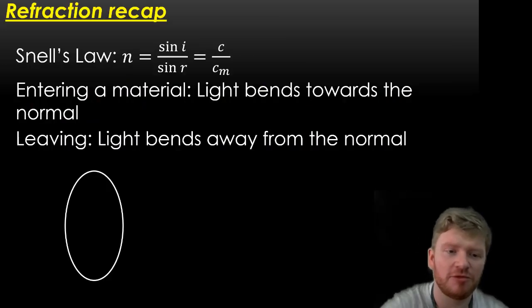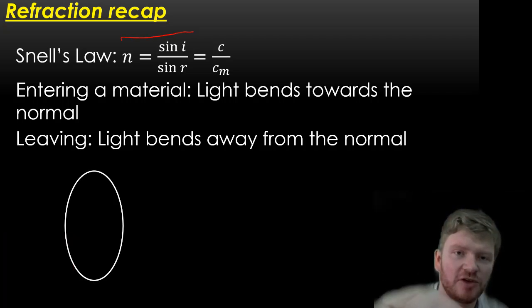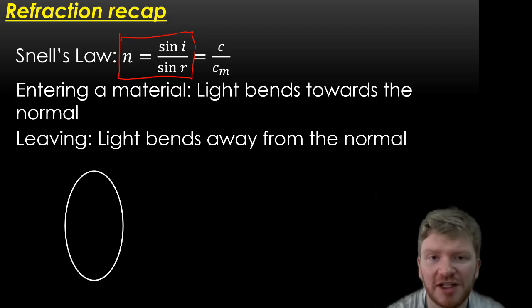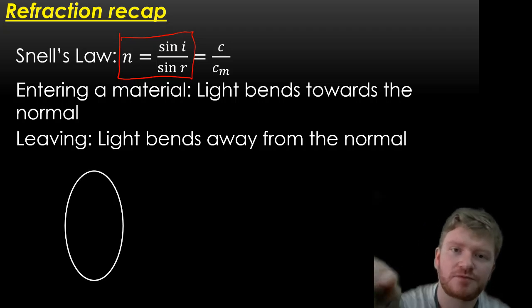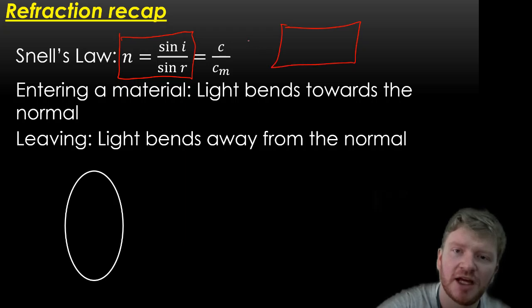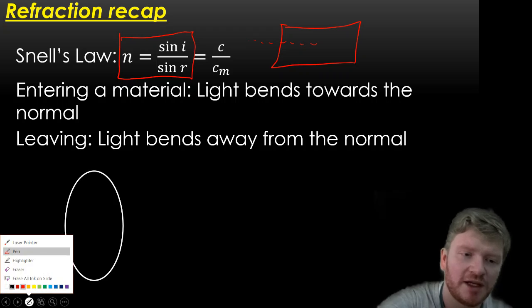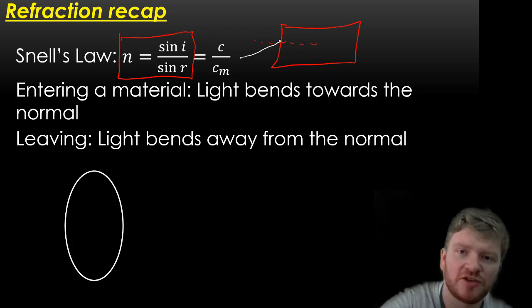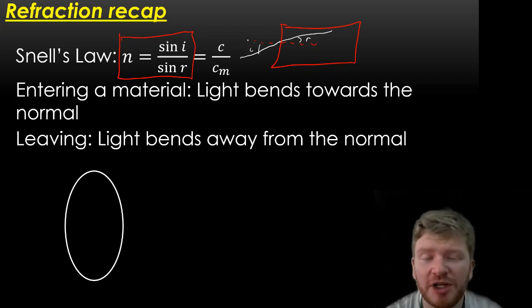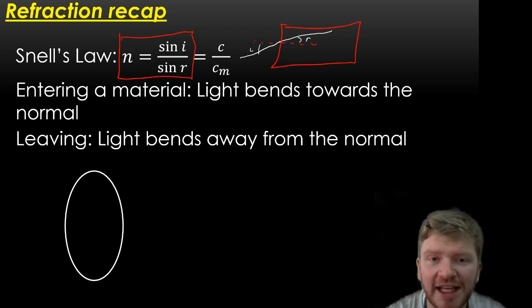So a couple of things that are really key for you to remember at this stage. The first is Snell's Law, and Snell's Law tells us that the refractive index of a material, which is n, is equal to sine of the angle of incidence divided by sine of the angle of refraction. If we think of a block like that, and the normal goes along like that, then when light enters, you have an angle of incidence and an angle of refraction. So that's the angle of refraction, that's the angle of incidence. And I'm going to keep reminding you of this, but for IGCSE, any angle that is inside a material, that is an angle of refraction. Any angle that is outside a material is always an angle of incidence. Now that does change a little bit when we get to A level, we do this a bit more rigorously, but for now, that's what you need to know.